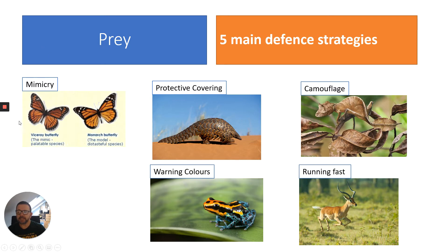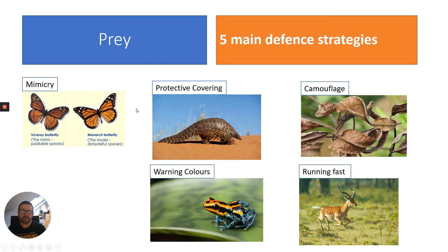The first one is mimicry. Here we have a viceroy butterfly — it's a mimic and it's palatable to certain bird species, whereas a monarch butterfly is distasteful to certain species, so the viceroy benefits from that colouration. Next is protective covering. Many species protect themselves because they can't outrun or shelter away from certain predators, and therefore they have protective covering so that when they are attacked, it's very hard for the predator to kill them.